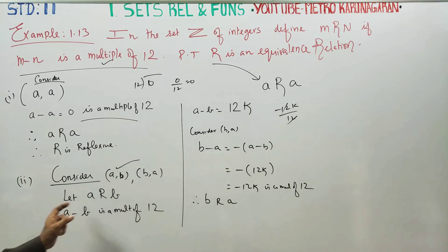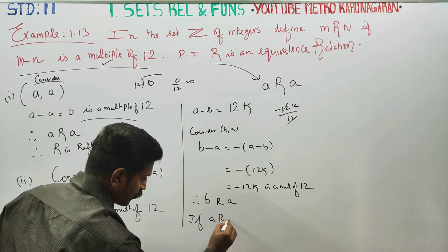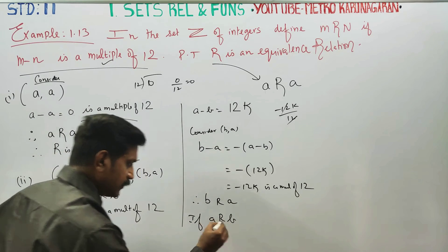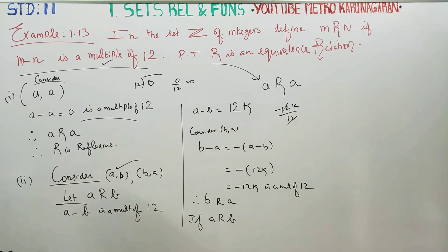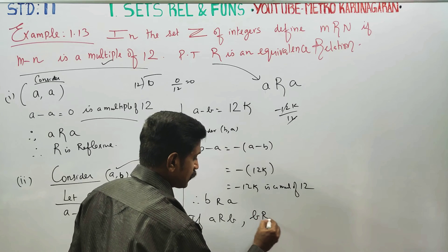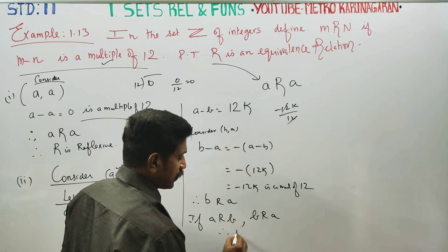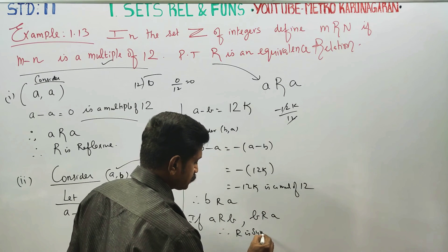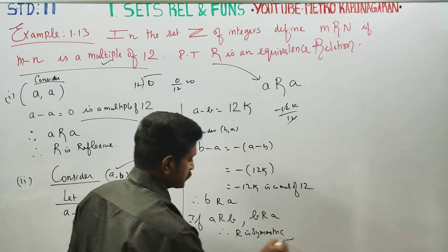If a is related to b, then b is related to a. Therefore R is symmetric.